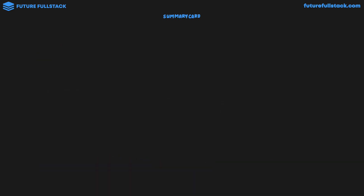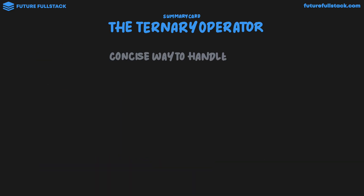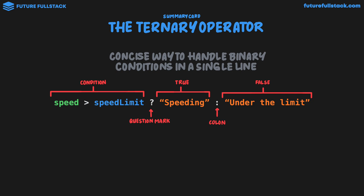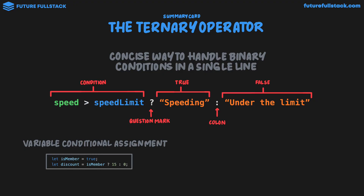Let's wrap up with a summary card. The ternary operator is a concise way to handle binary conditions in a single line. The syntax: on the far left we have our condition, then a question mark — think of it as 'is the speed greater than speed limit?' — followed by the true outcome 'speeding', then a colon and the false outcome 'under the limit'. The two use cases are: variable conditional assignment — let discount equals isMember question mark 15 colon 0, where discount stores 15 because isMember is true — and short messages, where the variable message stores 'speeding' or 'under the limit' depending on the condition.